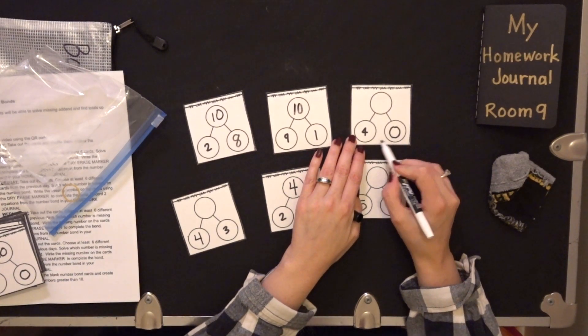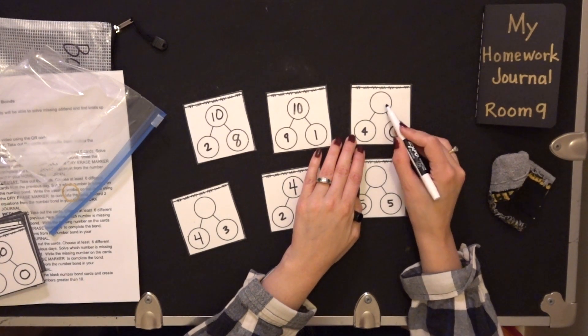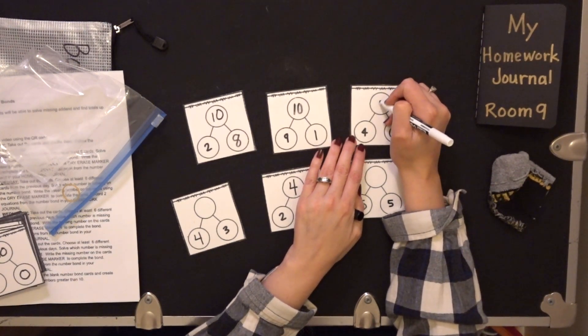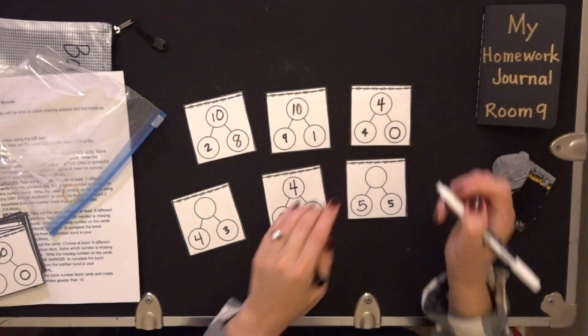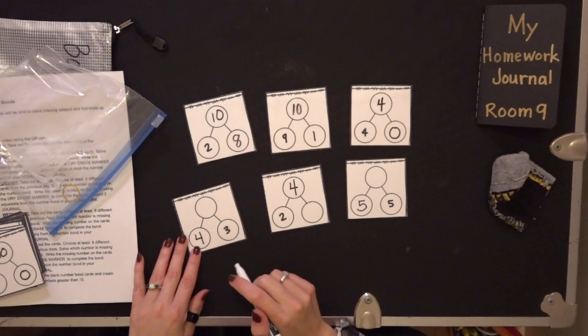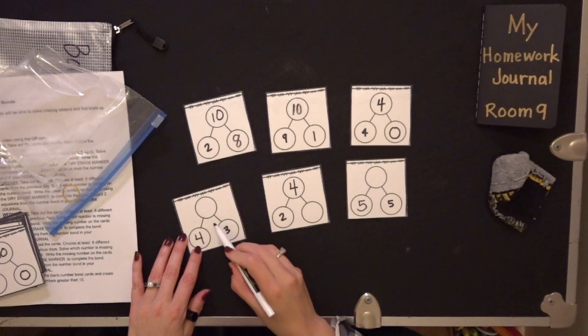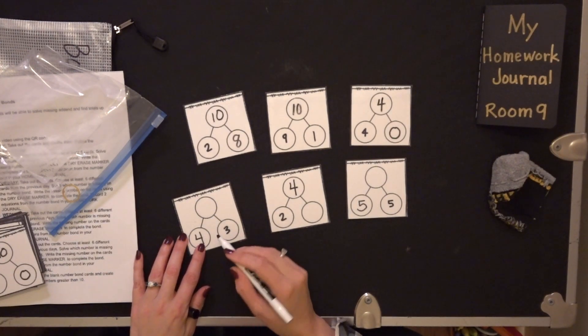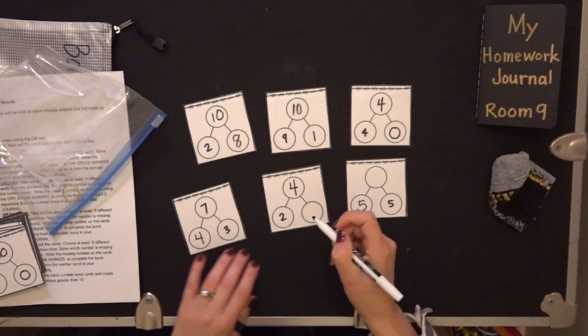I have two parts again but not the whole. So I have four and zero. Four plus zero is four. Here I have four and three. So four and three is seven.